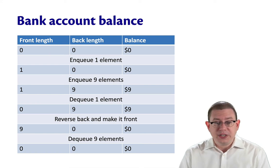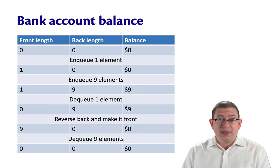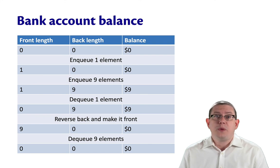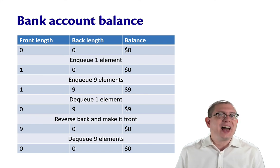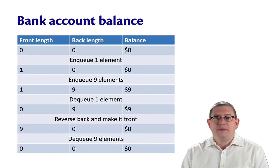Next, suppose we dequeue one element. That's going to make the front empty. We're not allowed to leave the front empty because of the rep invariant. So now we need to reverse the back list. That's going to cost us nine dollars, which we pay for. That's exactly how much we have in our bank account. Now the front is going to be nine. And we're going to have a zero account balance again.